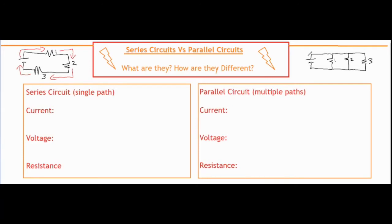So they can leave the power source and then go through the first loop, they can go around and go through the second one, or they can loop around and go through the third one. So any circuit where there are multiple paths for the electrons to travel through would be considered a parallel circuit.